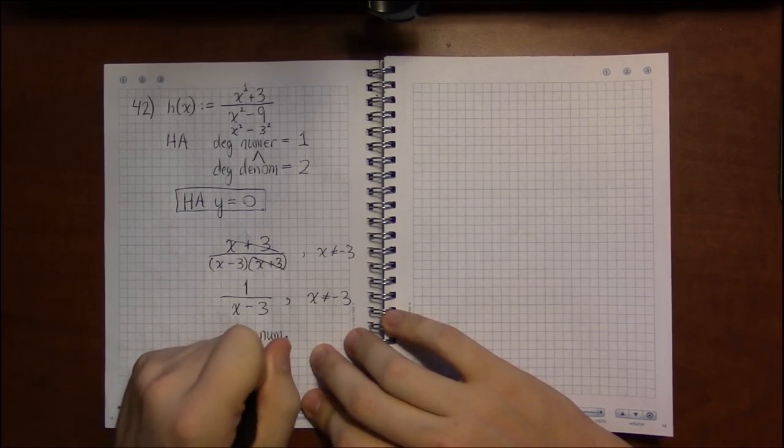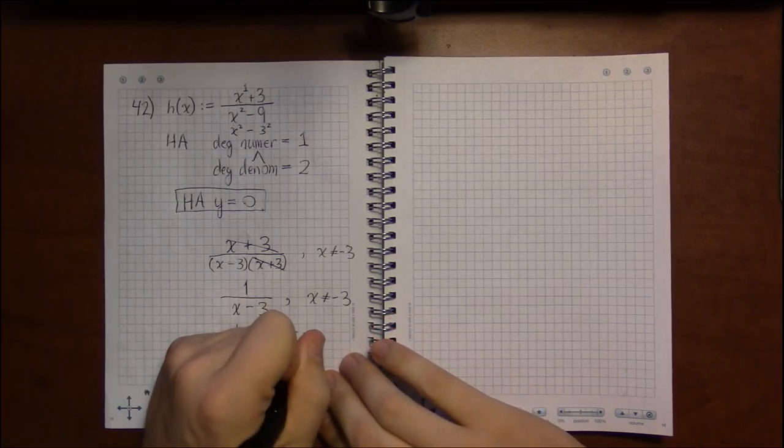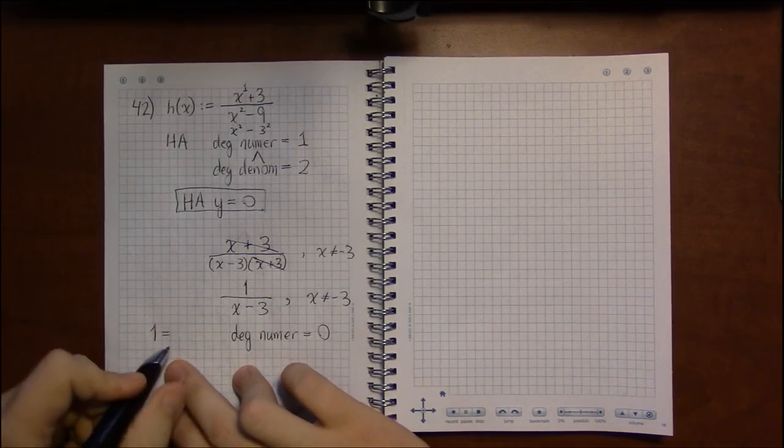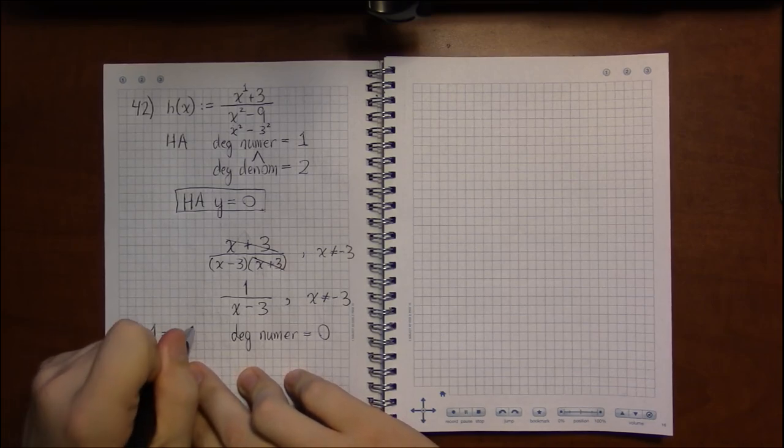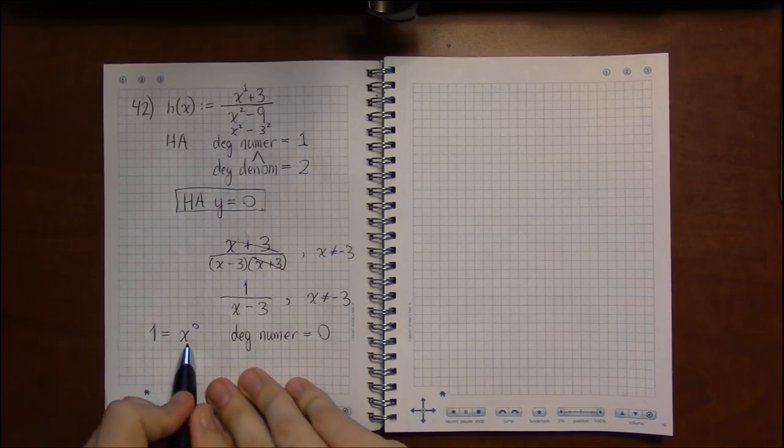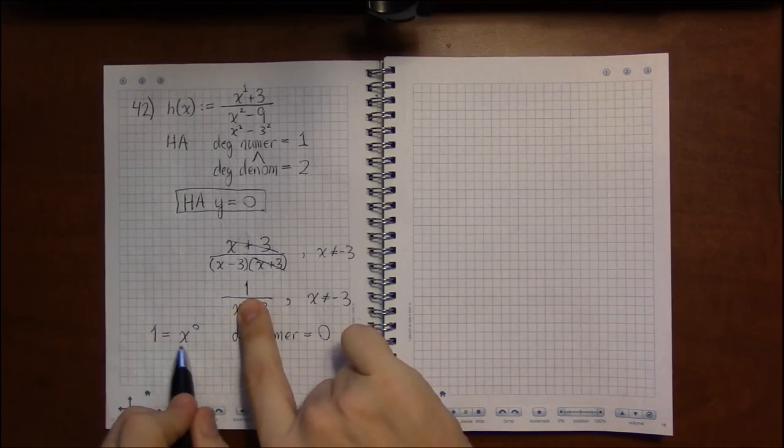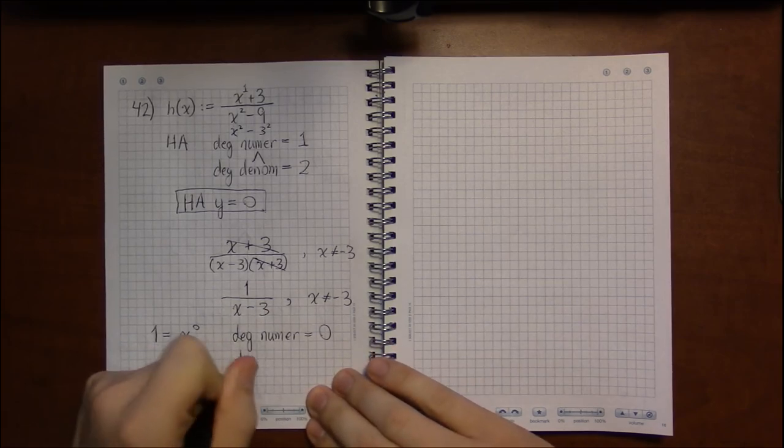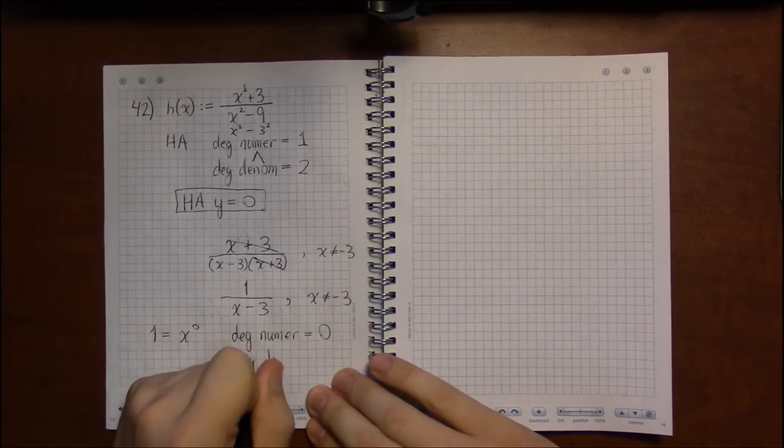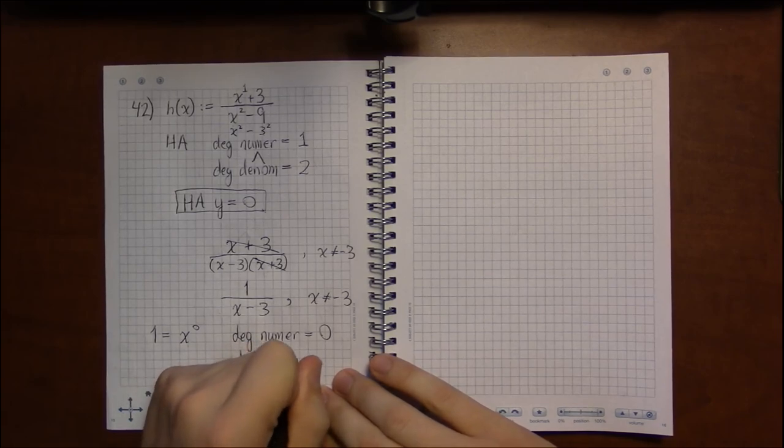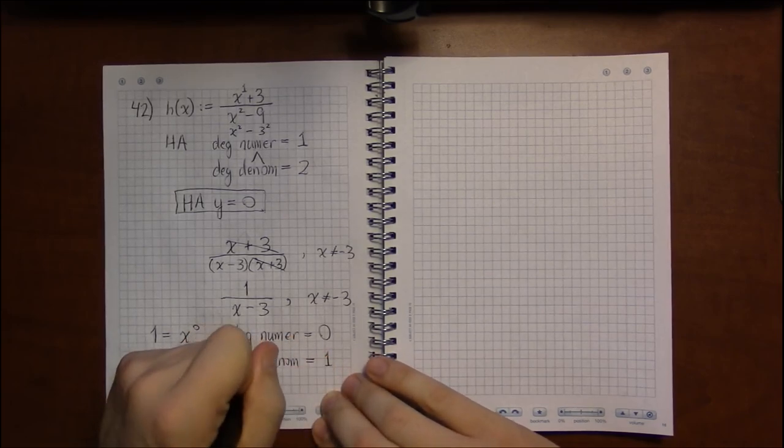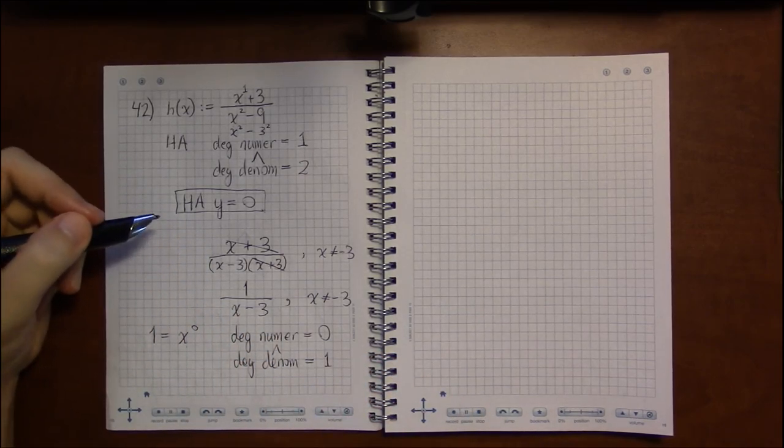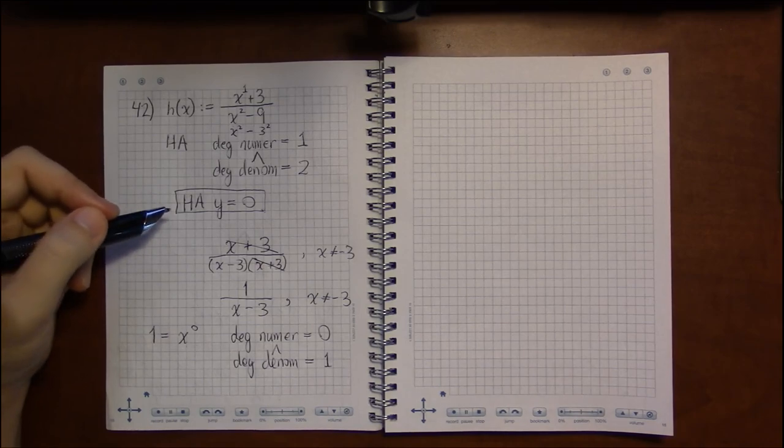Here the degree of the numerator is going to be degree 0. Simply because anything to the 0 power is 1. So I can think of this 1 on top as being x to the 0. And then the degree in this new denominator is still going to be larger than the new numerator. The degree of the denominator is going to be 1. So we still end up with the same horizontal asymptote.